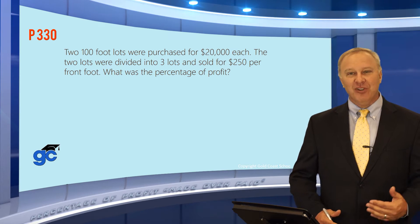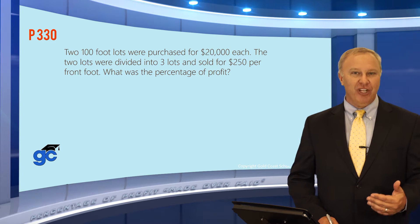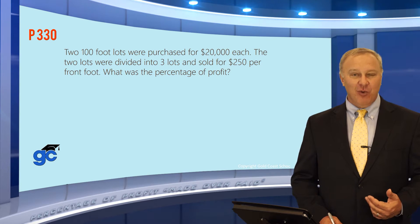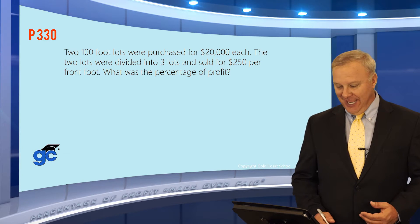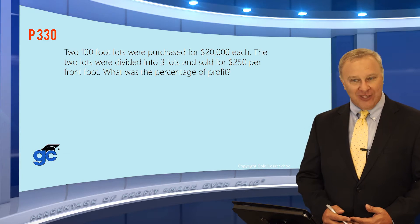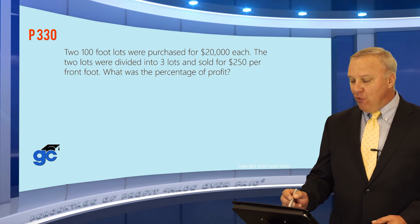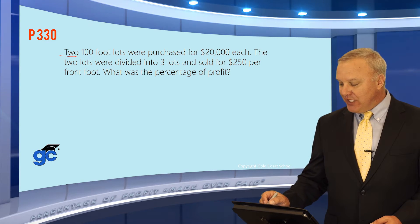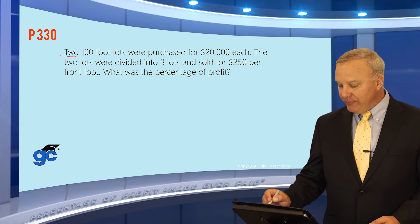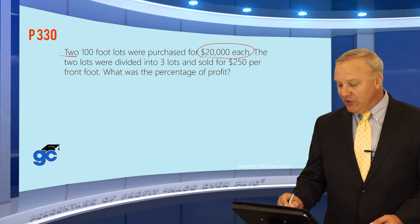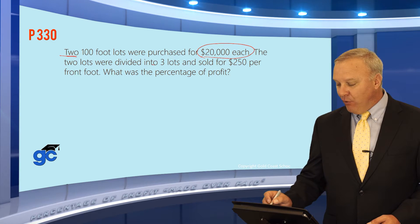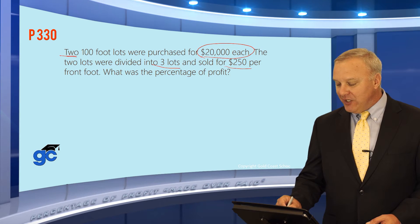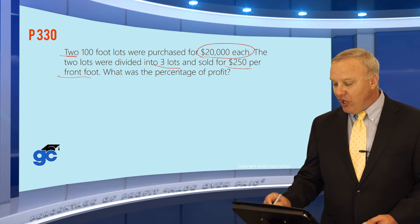In this section, we're going to talk about percentage of profit and loss. The formula that we use to calculate that is what we call made over paid. Let's take a look at a question. This question says two 100-foot lots were purchased for $20,000 each. The two lots were then divided into three lots and sold for $250 per front foot. The question asks you: what is the percentage of profit?